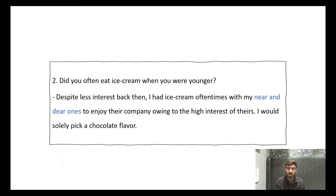After this, our question is: Did you often eat ice cream when you were younger? Younger means your age three, four, or five years before, when you were young. Despite less interest back then, I had ice cream often times with my near and dear ones. I enjoy their company owing to the high interest of theirs. I would slowly pick a chocolate flavor. Despite, actually it's a preposition. Near and dear ones, again a phrase meaning people who are close to us.